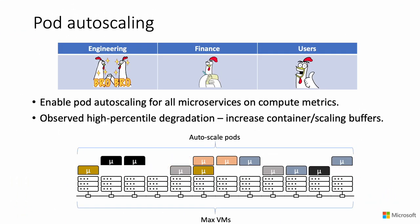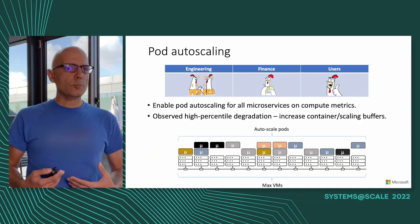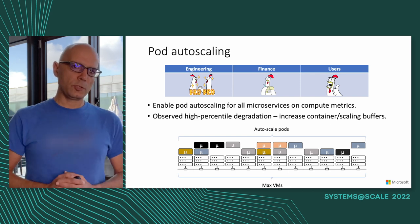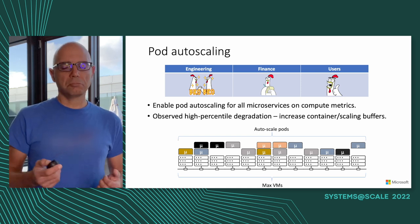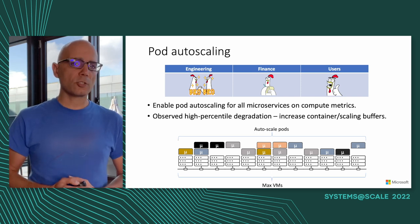The next step was deploying pod autoscaling, where you scale the number of containers up and down based on current demand. We tied the scaling to simple compute metrics like CPU and GPU workload. We started to observe latency at the higher percentiles for a very small number of users, which was not acceptable. At the time, all we did was a simple solution: increase buffers for container reservation and decrease scaling targets. We wanted to keep our users as happy as possible.